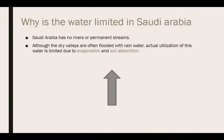Why is the water limited in Saudi Arabia? Saudi Arabia has no rivers or permanent streams. Although the dry valleys are often flooded with rainwater, actual utilization of this water is limited due to evaporation and soil absorption. That is the reason why the water is limited in Saudi Arabia.